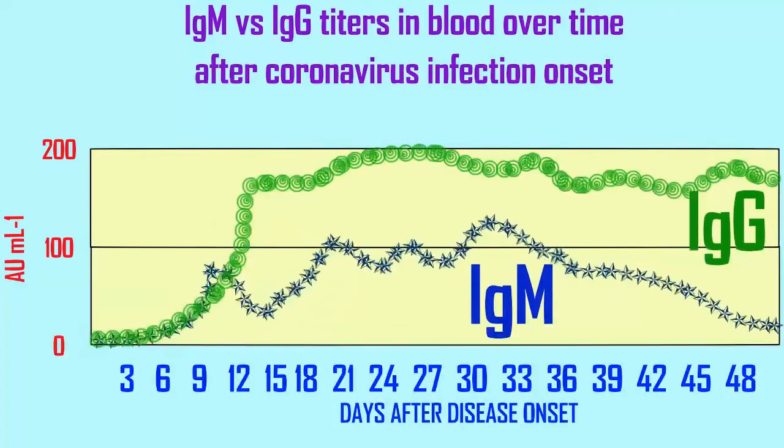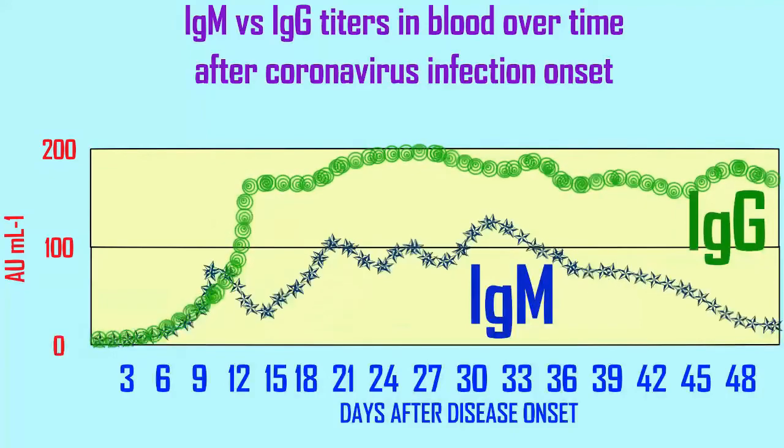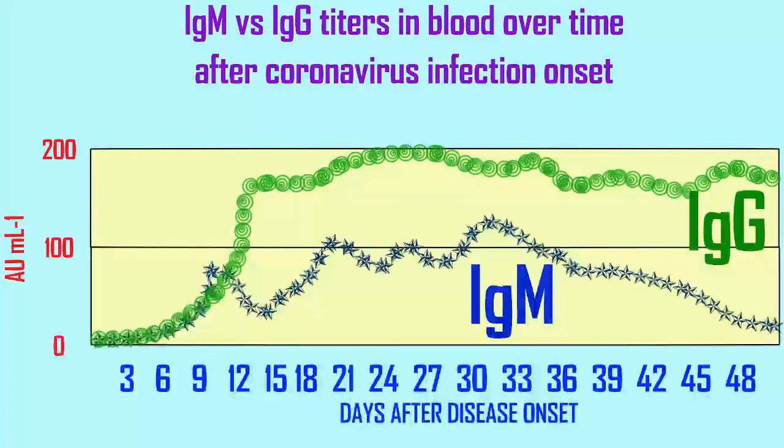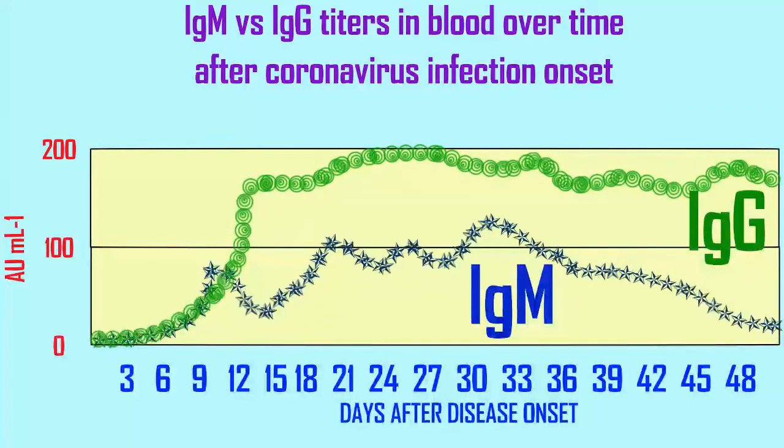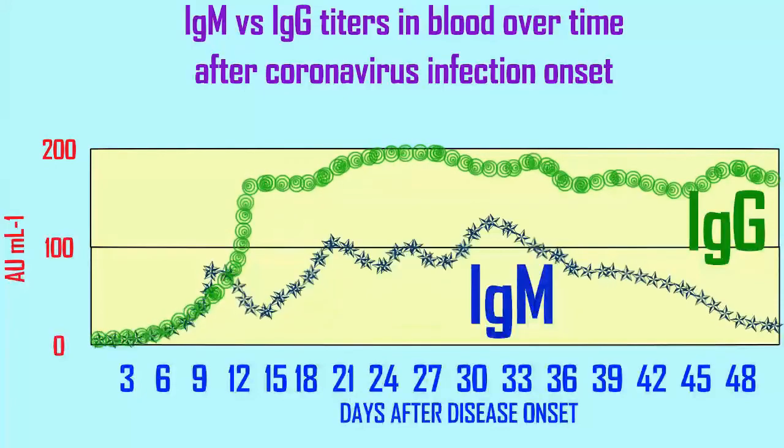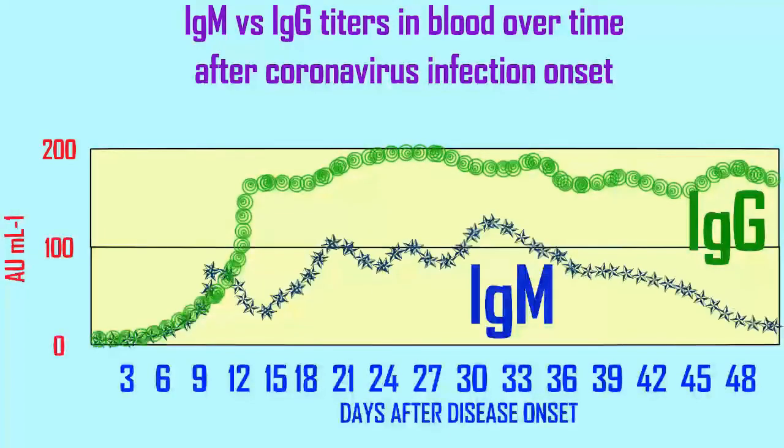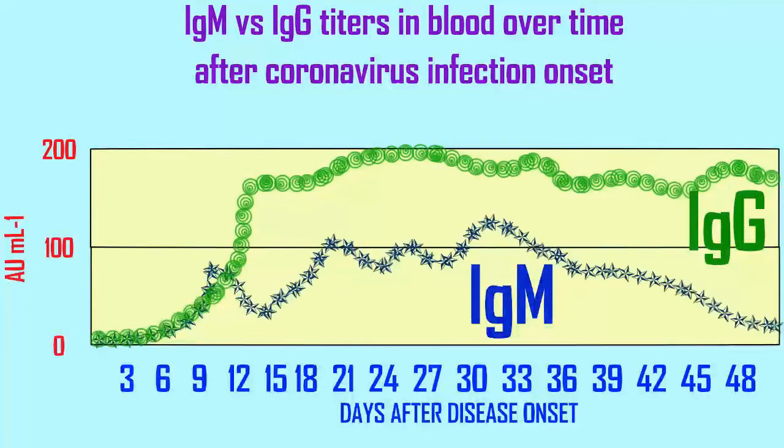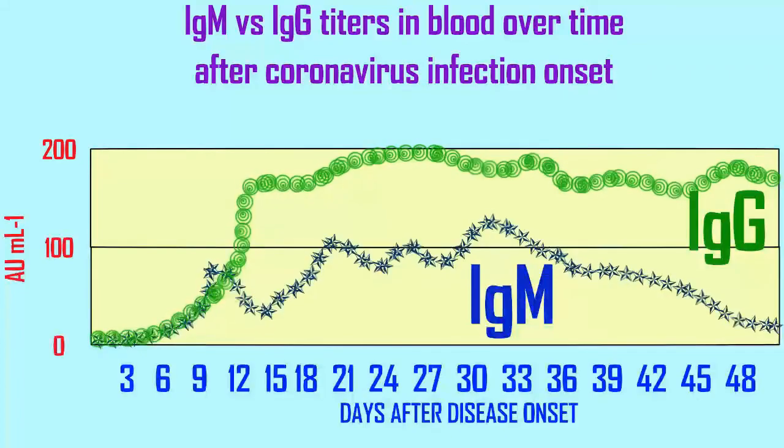IgG production can continue for months after the initial exposure, and so someone who was exposed to coronavirus months ago might still be making IgG antibodies but no longer be making measurable IgM antibodies.